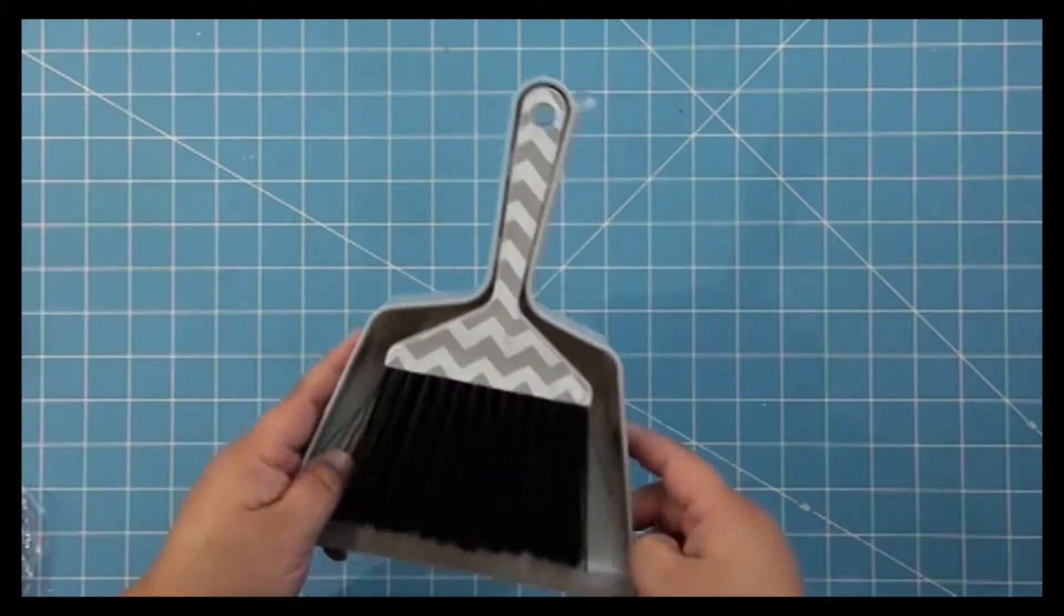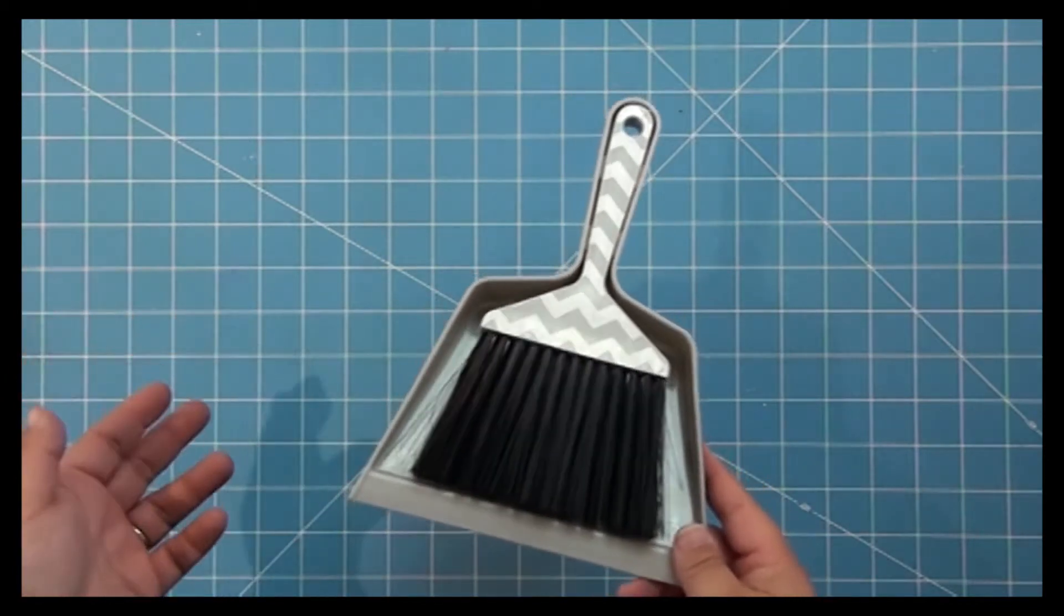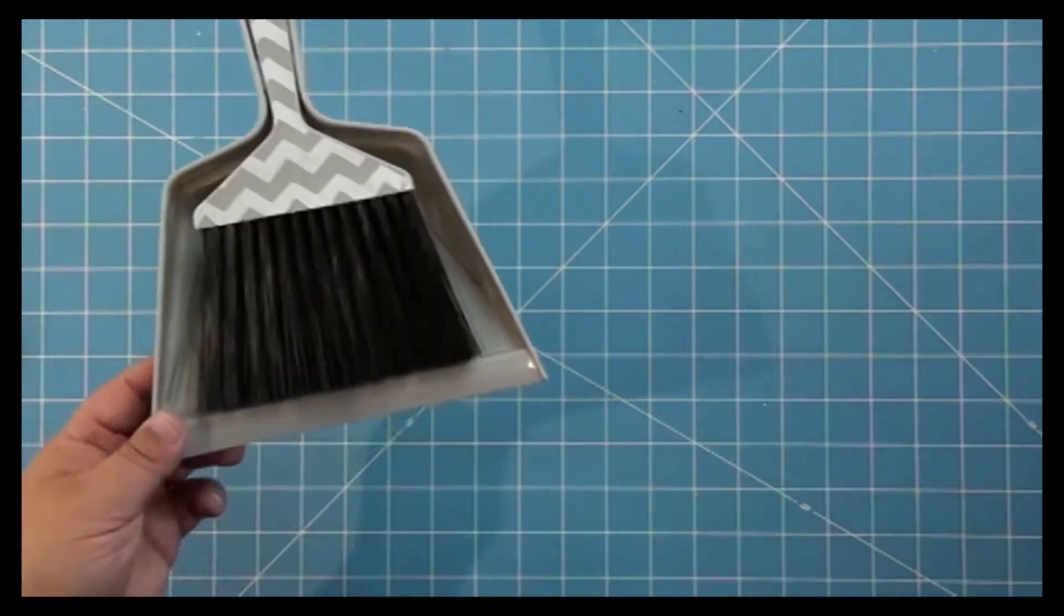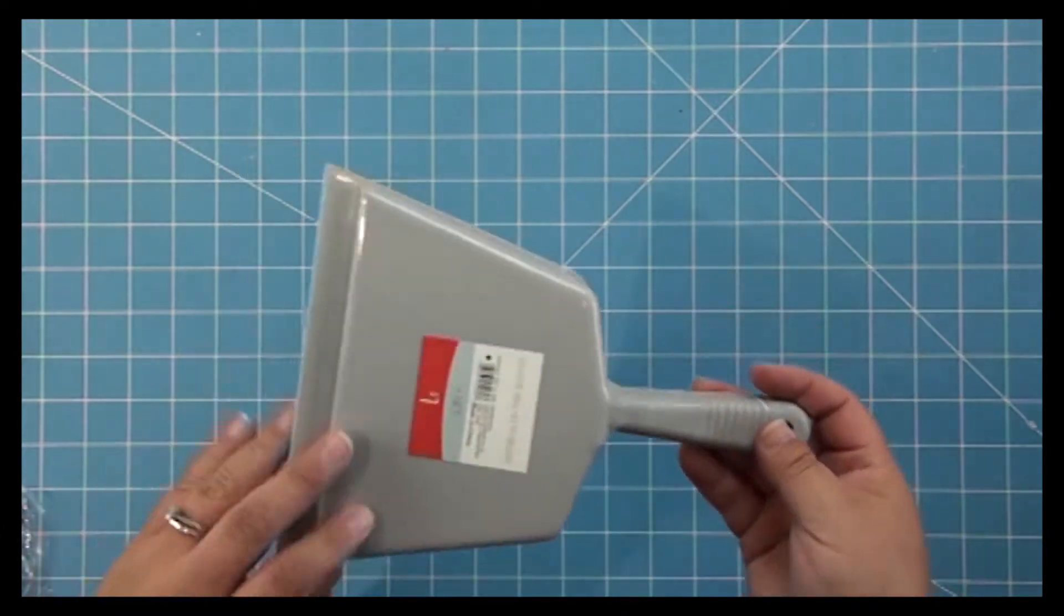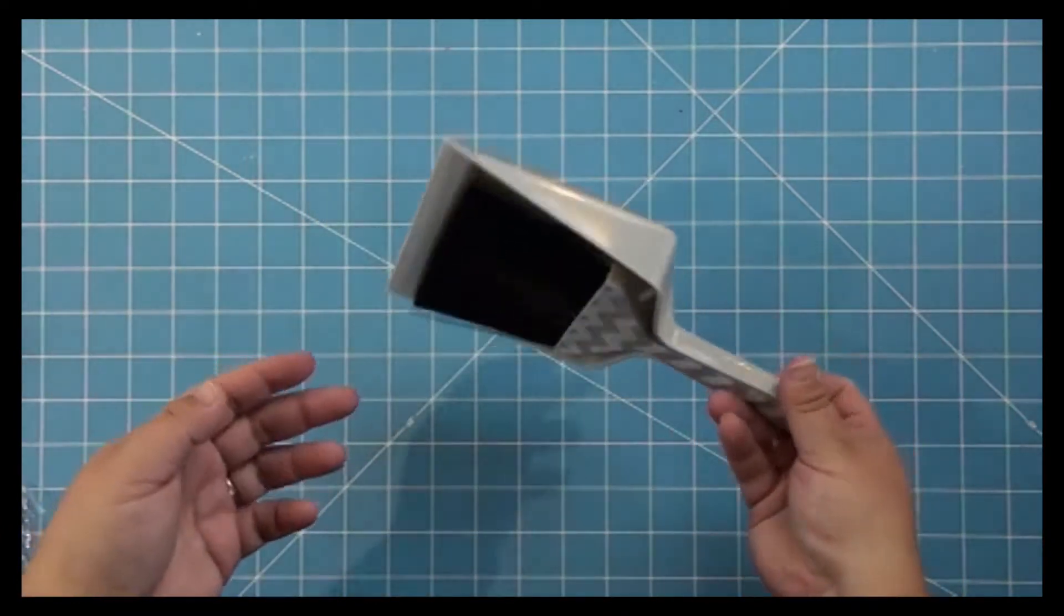If you go to Target and use the Cartwheel app, they have all kinds of coupons where you can get a percentage off of your purchase. And this week they have it in the dollar spot where things that are a dollar you can get 20% off. So this is 80 cents.